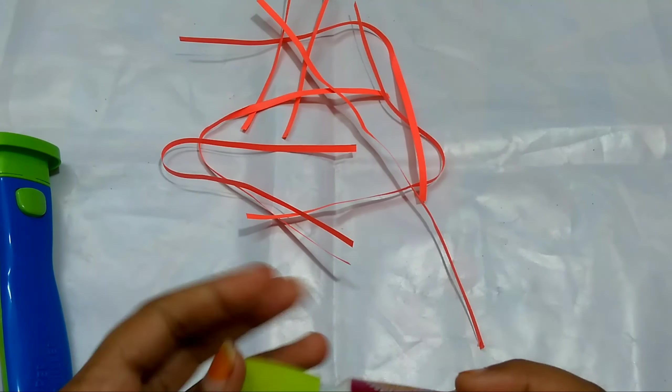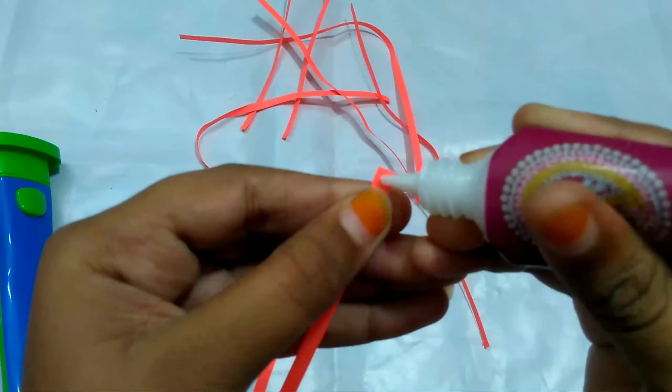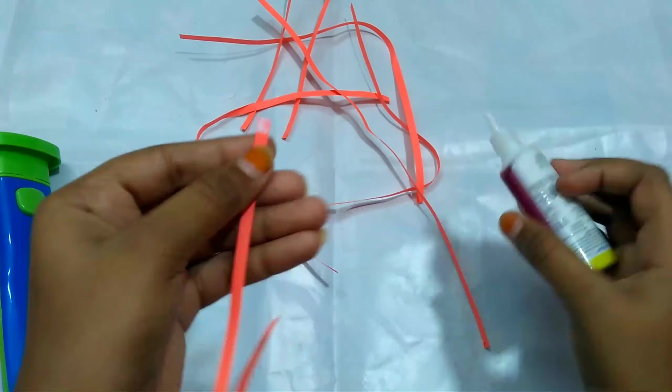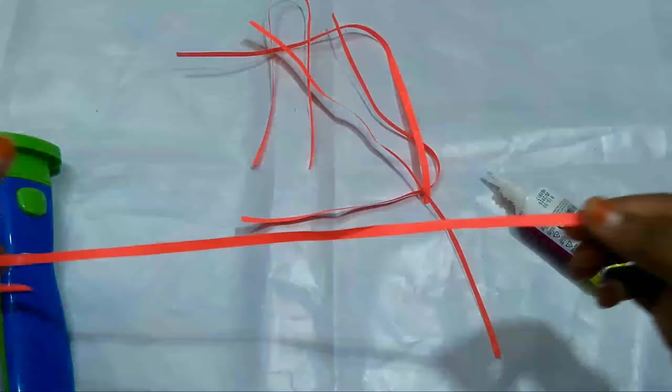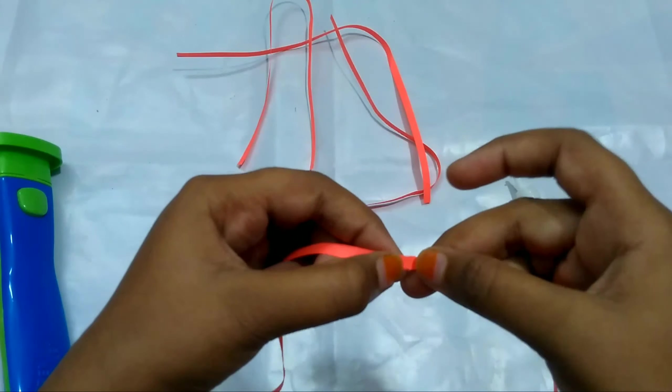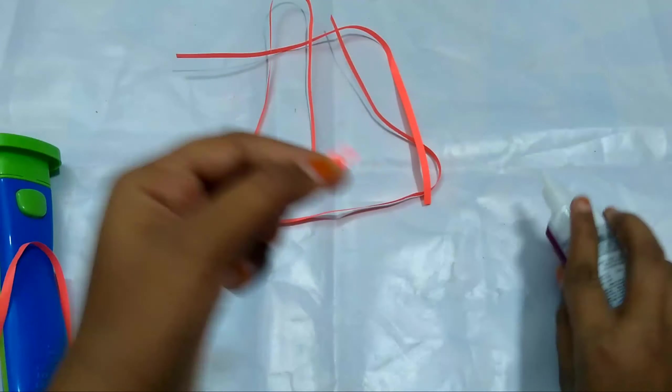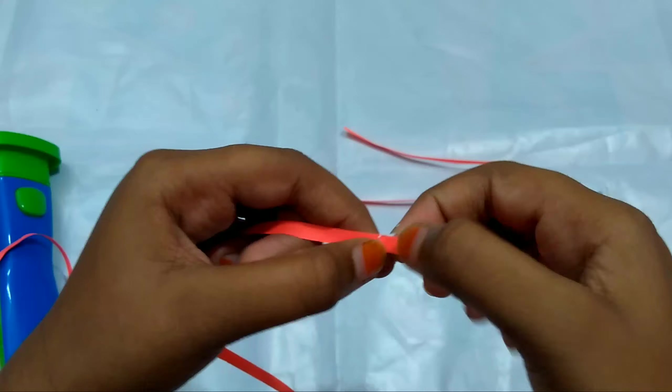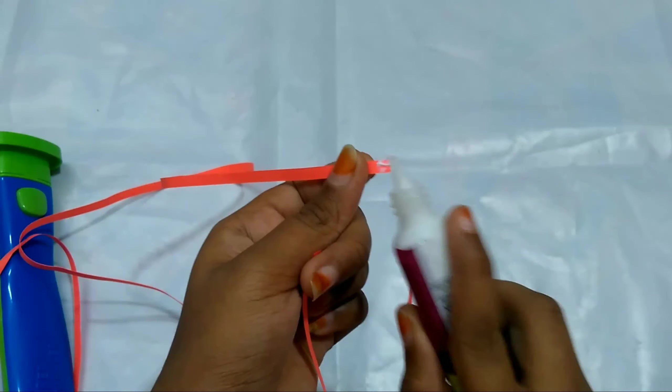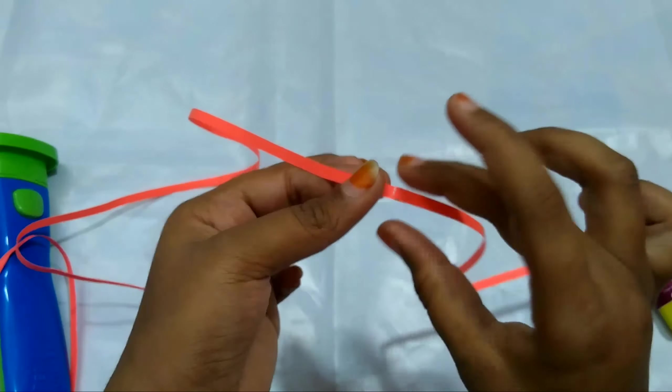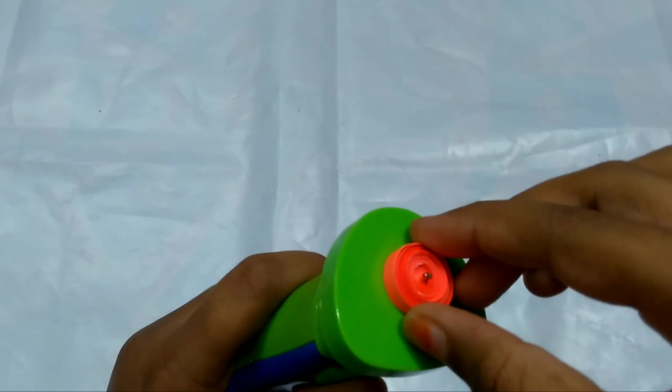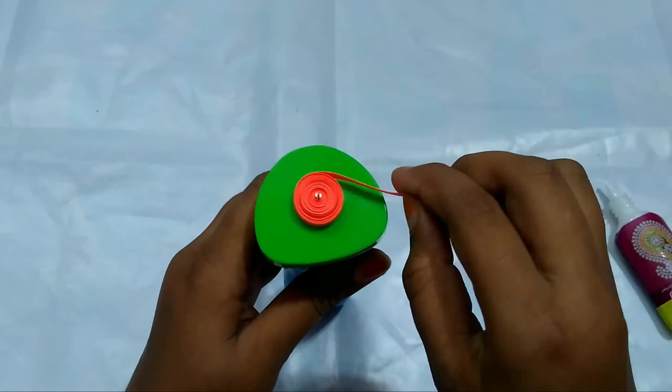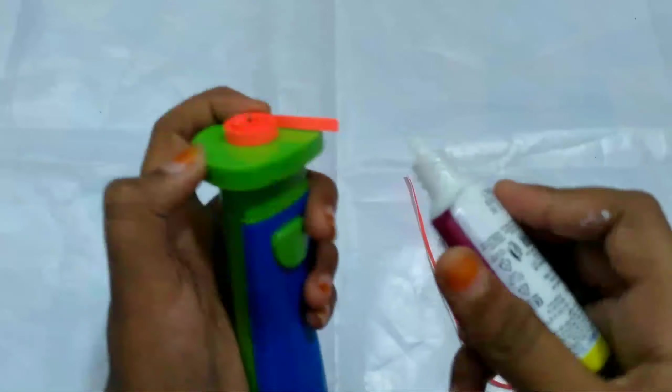Now apply glue to the strands and attach the seven strands together. Now take the super quiller and quill it. If needed, add one more strand.